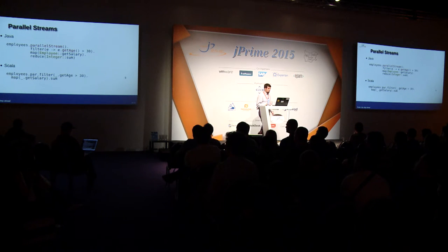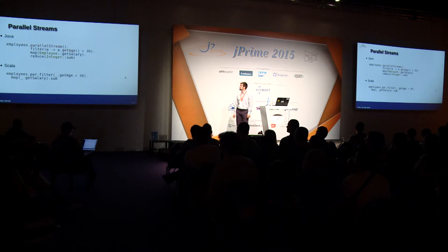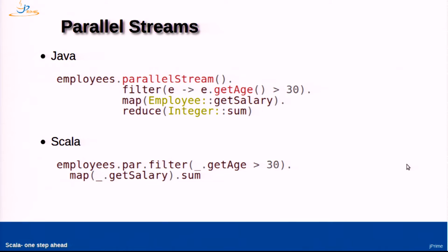Another feature reportedly among the motivators for Java 8 lambdas is parallelism and parallel streams. Taking our regular stream example, we can parallelize it very easily in Java — just say parallelStream instead of stream, and many operations are parallelized efficiently by being split and then combined. Scala has had this feature for a fairly long time: you can just say employees.par, and everything afterwards is parallelized.